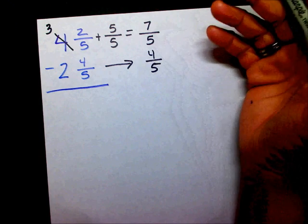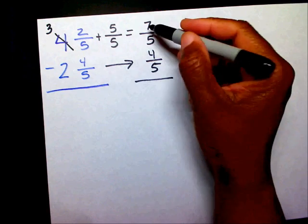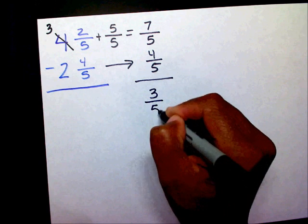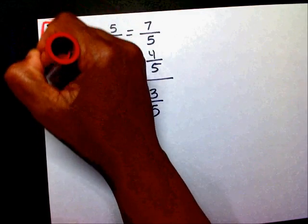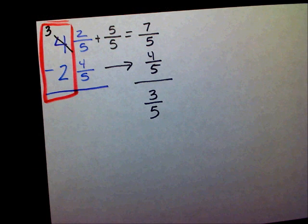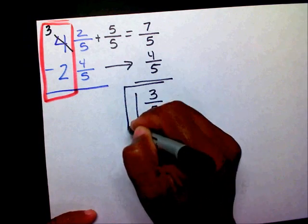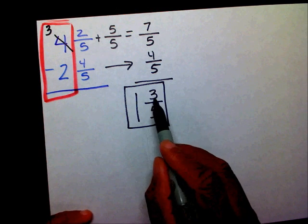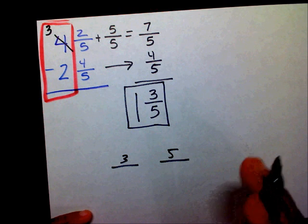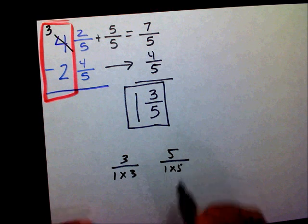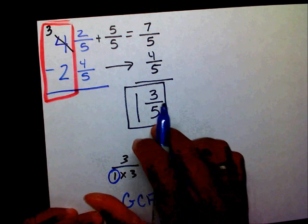Now I'm going to check to see if I have the same denominator. Since both denominators are five, I can subtract now. Seven minus four is three-fifths. However, don't forget about your whole number — a lot of people forget about their whole numbers. Three minus two is one. This is your final answer. I know that three and five have a greatest common factor of one — one times three, one times five — they only share a one. So since the GCF is one, this is already in simplest terms. The final answer is one and three-fifths.